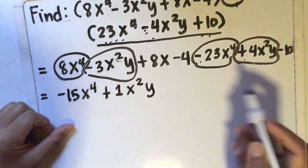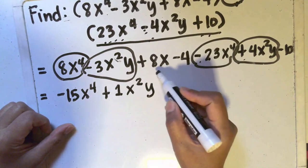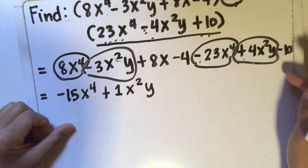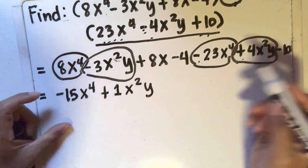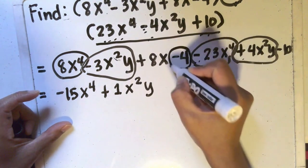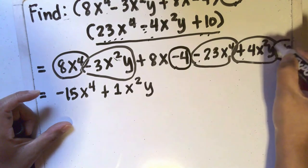And then I can see that 8x doesn't have a partner in here. There are no other terms in this expression that has just x in it. But I can combine the constant terms negative 4 and negative 10.